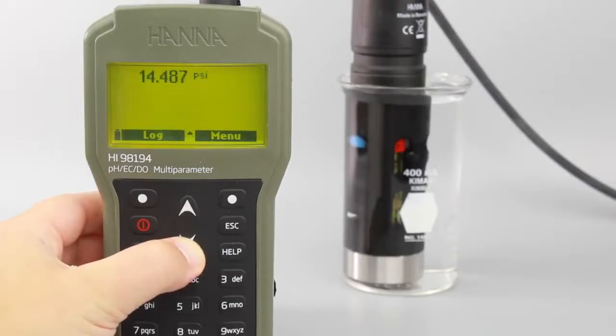So that's it. The Hanna Instruments HI-98194 Multi-Parameter Meter is perfect for field use across many industries. You can find everything you need for your meter at hannainst.com/HI-98194.